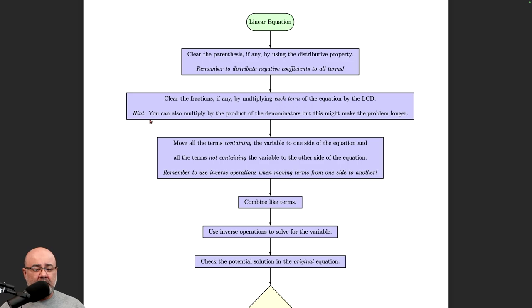Now what you can also do in a pinch, or if you're having a hard time finding what the LCD is, the perhaps less time intensive way, but you got to pay the piper one way or the other, is to just multiply all the denominators together and then multiply each term of the equation by the product of the denominators. This will make the numbers larger because you're not multiplying by the least common denominator, you're multiplying by some common denominator.